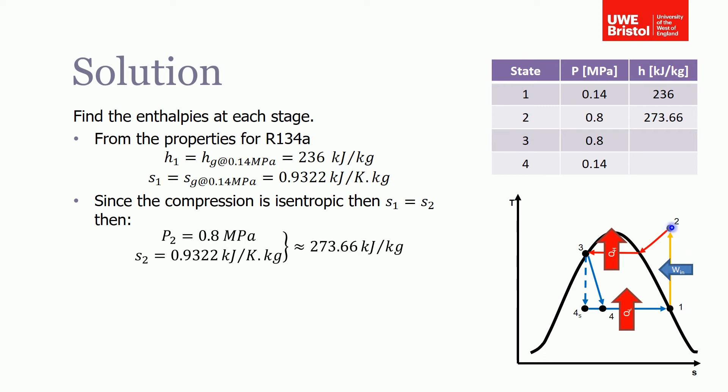Then the entropy at 2 is the same as the entropy at 1, so we can work it out that way. The entropy at 1 is the entropy of the saturated vapor at that pressure, so it comes out as 0.9322 kJ per kilogram Kelvin.